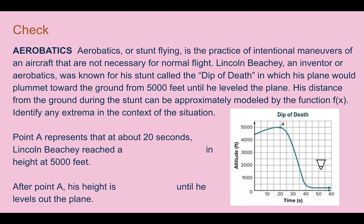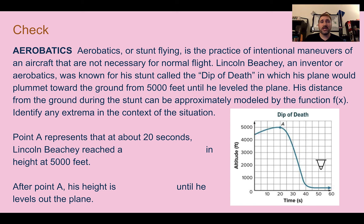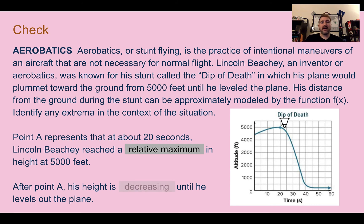Check your understanding: read through the situation. Determine if point A is a relative maximum or relative minimum, then determine if, after point A, his height is increasing or decreasing. Pause the video now and complete the check. Check your answer: first, he reached a relative maximum. Then after that, his height is decreasing — you can see it's going down from left to right.